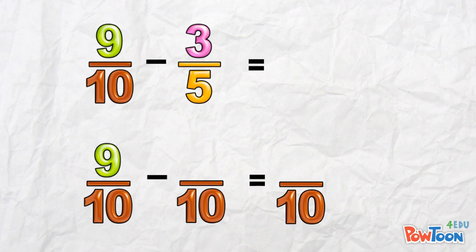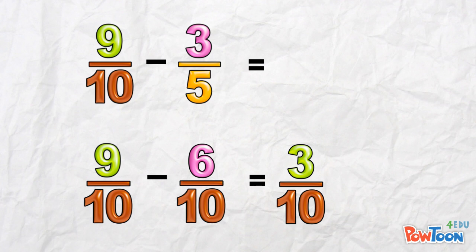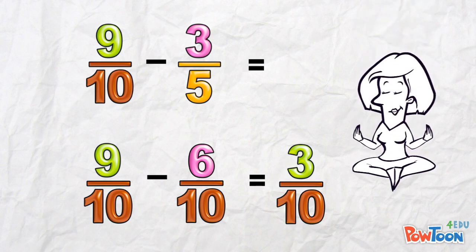We multiply 5 by 2 to get 10. So we multiply the numerator by 2. And that gives us 6 tenths. Now, subtract the numerator. 9 minus 6 is 3. 3 tenths.